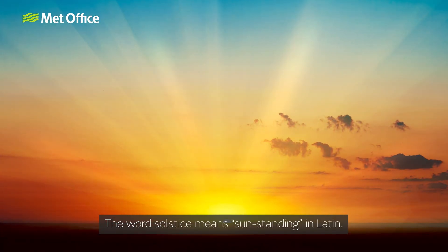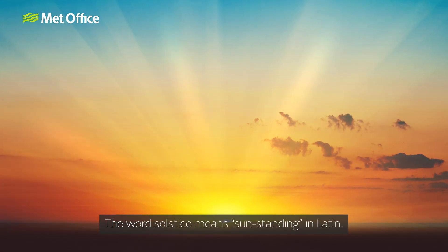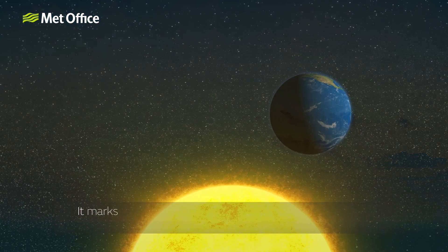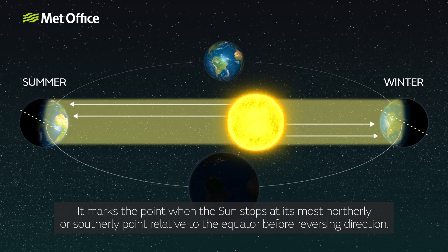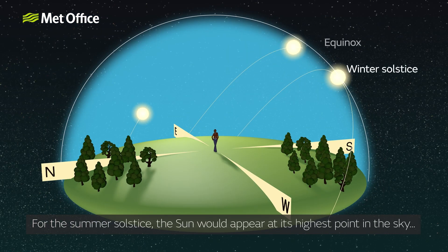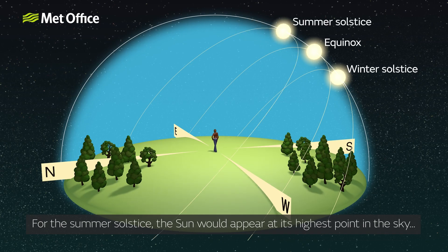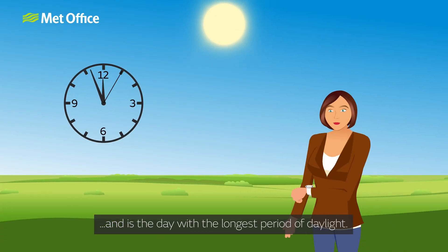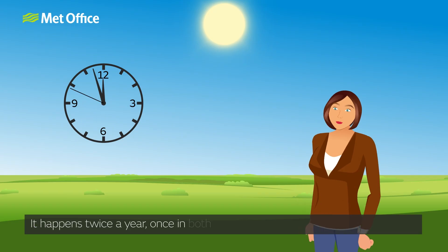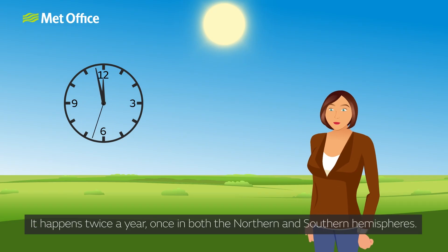The word solstice means 'sun standing' in Latin. It marks the point when the Sun stops at its most northerly or southerly point relative to the equator before reversing direction. For the summer solstice, the Sun appears at its highest point in the sky and it is the day with the longest period of daylight. It happens twice a year, once in both the northern and southern hemispheres.